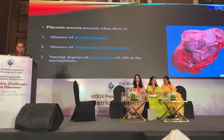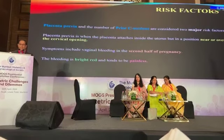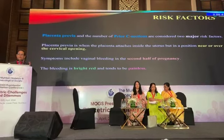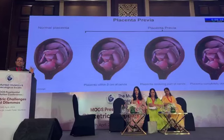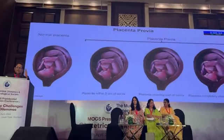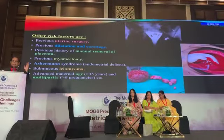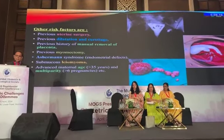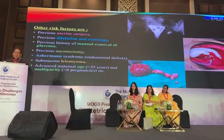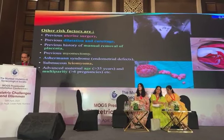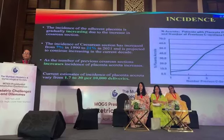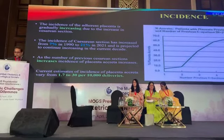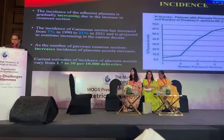When there is absence of decidua basalis and the Nitabuch's layer, there is a varying degree of penetration of villi into the myometrium. The two major risk factors are placenta previa and a previous caesarean section. Other risk factors include uterine surgery, leiomyoma, and previous manual removal of placenta. The incidence at present has increased to 0.7 to 30 per 10,000 deliveries, largely due to the excessive number of caesarean sections.